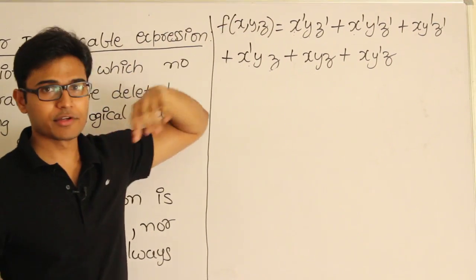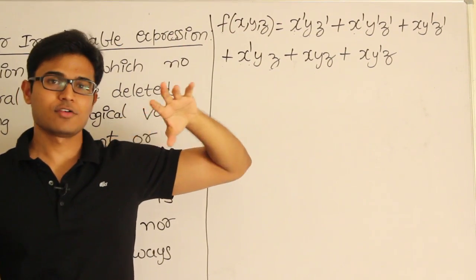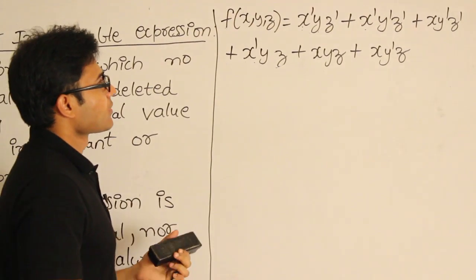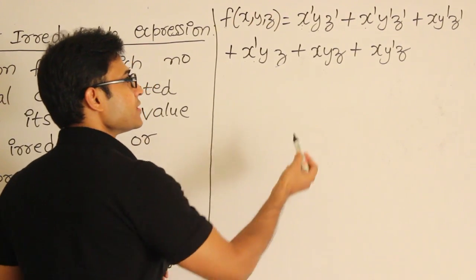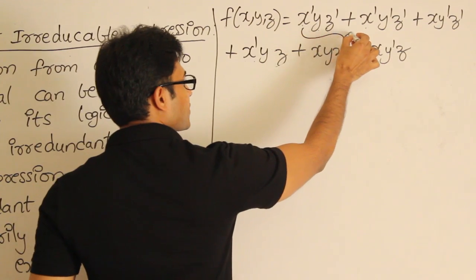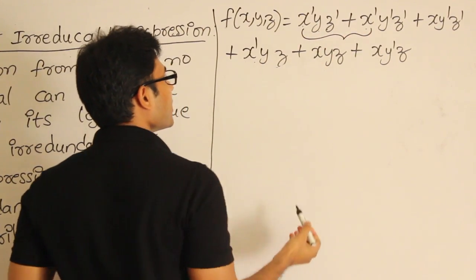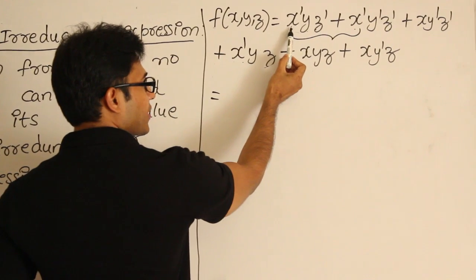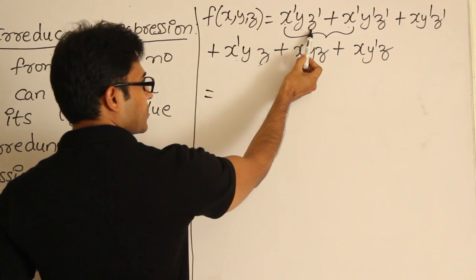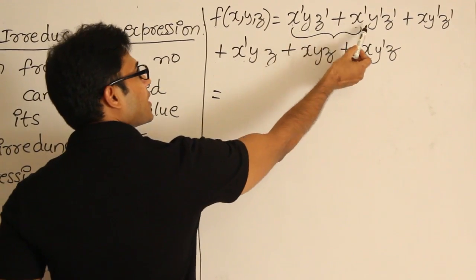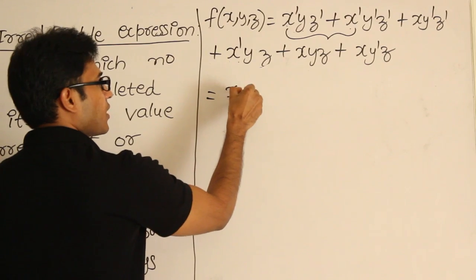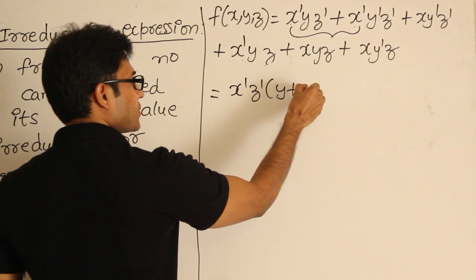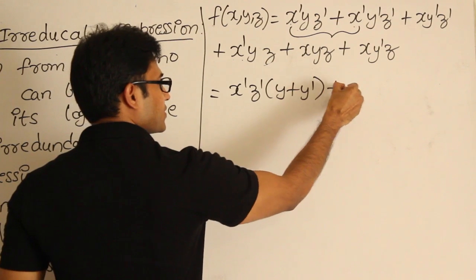Let us say f is a function in three variables and we are supposed to minimize it. So how I am trying to minimize it is I will take these two first and combine them. You can clearly see that if I pull out x prime and z prime as common, there will be y and y prime remaining. Therefore, x prime, z prime into y plus y prime plus.